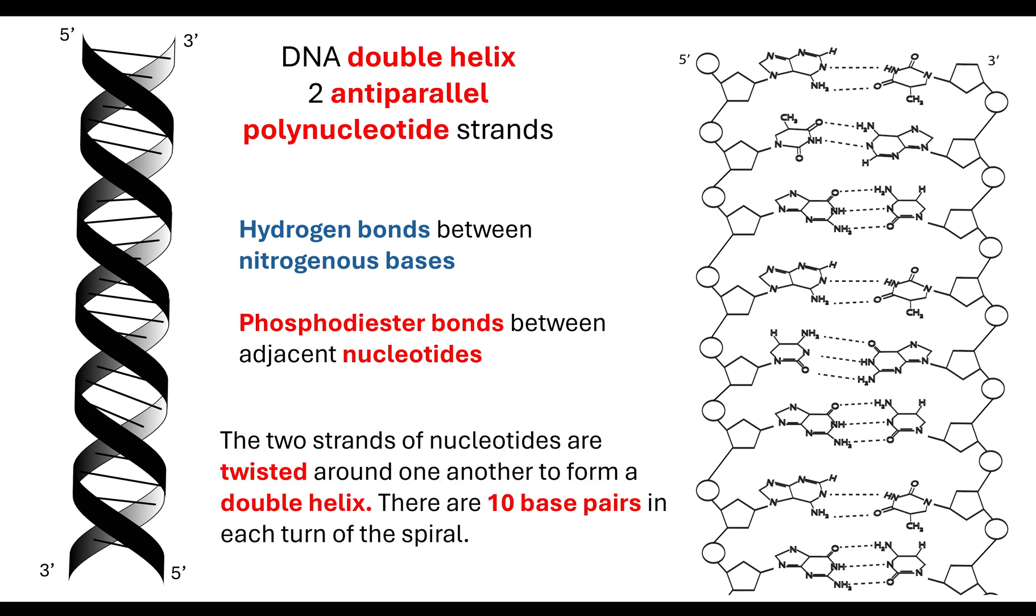We know that DNA has a double helix, so the two strands of nucleotides are actually twisted around one another to form that double nucleotide helix. What's important for us to note is that there are 10 bases in each turn of the spiral, and that helps to stabilize and pull the sugar phosphate out so it is separated enough to be a stable molecule.